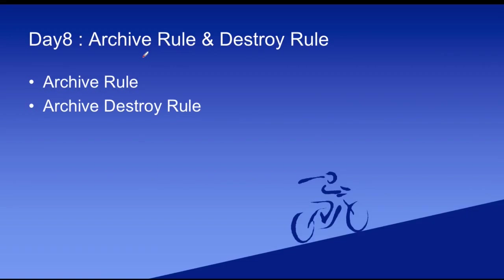First we have to understand what is the archive rule. If you remember, we have an archive rule in Outlook normally. So if any mail is more than one year old it goes to the archive, or similarly like WhatsApp messages — we can archive any specific message or mail, and whenever we need it we can restore it back to our inbox.